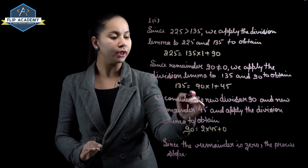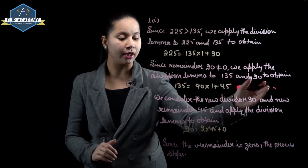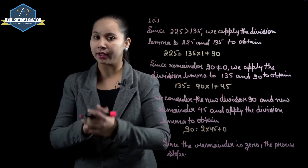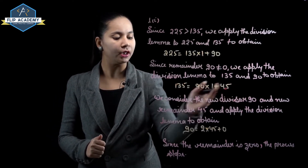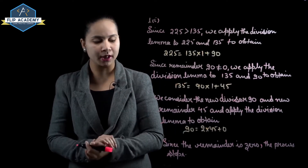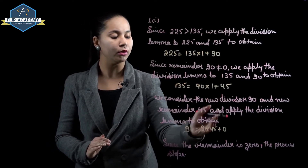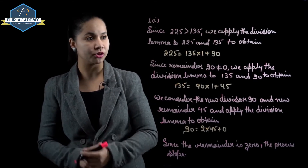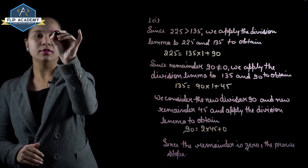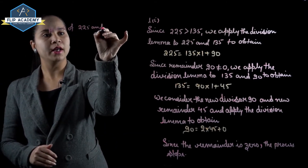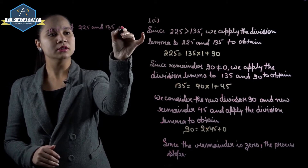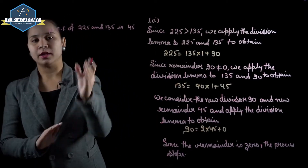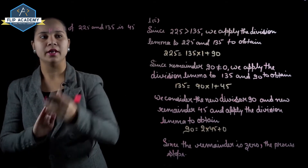We consider the new divisor 90 and new remainder 45, and apply the division lemma again: 90 = 2 × 45 + 0. The remainder is now 0, so the process stops. Therefore, the HCF of 225 and 135 is 45, which is the highest common factor. First part is complete.